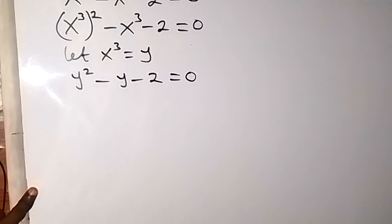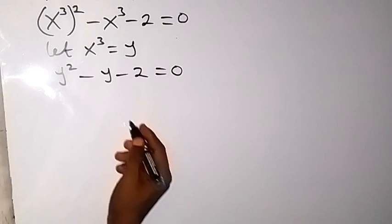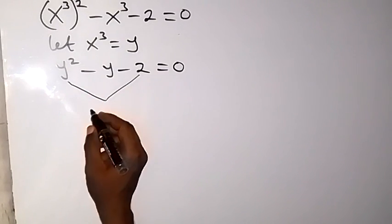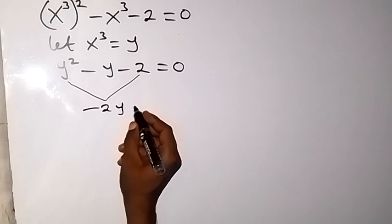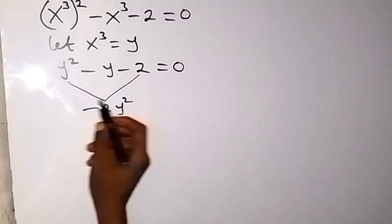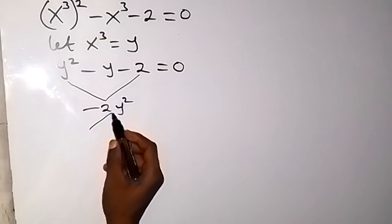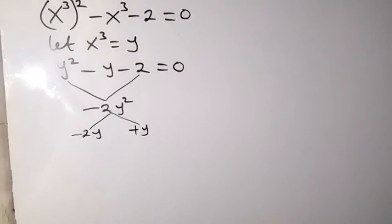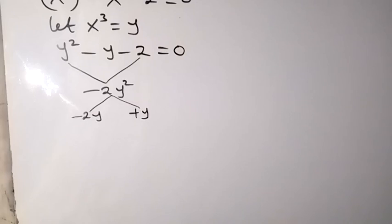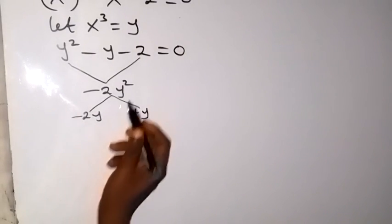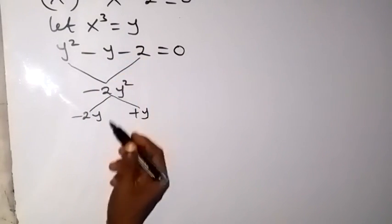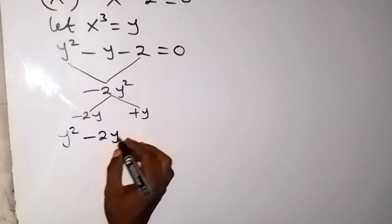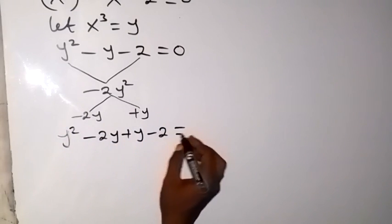From here, we can solve this quadratic equation — we can factorize. When we multiply the first and the last term, we have minus 2y squared. We can find the factors that will give us minus y. When we break this down, we have minus 2y plus y. The product gives us minus 2y squared and the sum gives us minus y. So let's replace minus y with minus 2y plus y. We now have y squared minus 2y plus y, then minus 2 equals to 0.